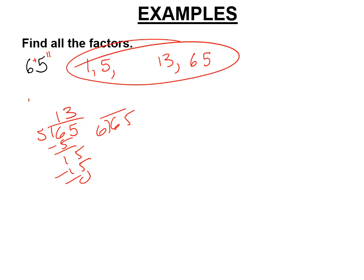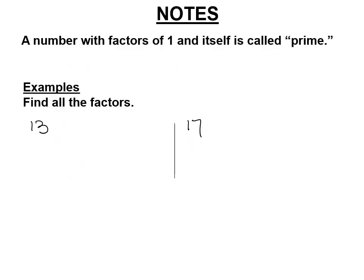Now, if you weren't sure about 1, you could check. So 65, is it divisible by 9? Well, no, because 7 times 9 is 63. You get a remainder. All right, a number with factors of 1 and itself is called prime. We're going to do more about prime in the next lesson. But this only has factors of 1 and 13. 17, only factors of 17 are 1 and 17. Those are called prime numbers when they only have 1 and itself.